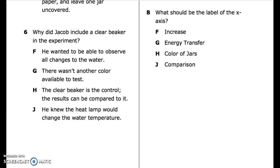Number 6: Why did Jacob include a clear beaker in the experiment? F. He wanted to be able to observe all changes to the water. G. There wasn't another color available to test. H. The clear beaker is the control. The results can be compared to it. J. He knew the heat lamp would change the water temperature.